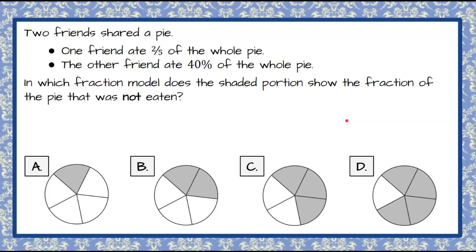Here's our question. Two friends shared a pie. One friend ate two-fifths of the whole pie. The other friend ate 40% of the whole pie. In which fraction model does the shaded portion show the fraction of the pie that was not eaten?